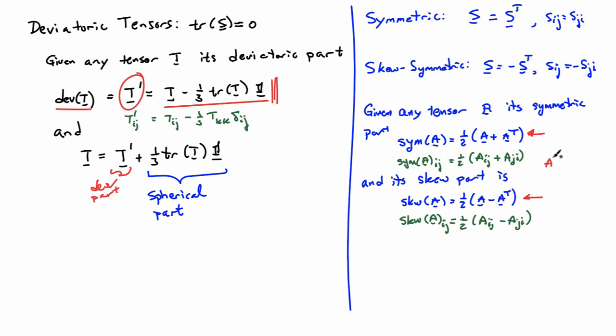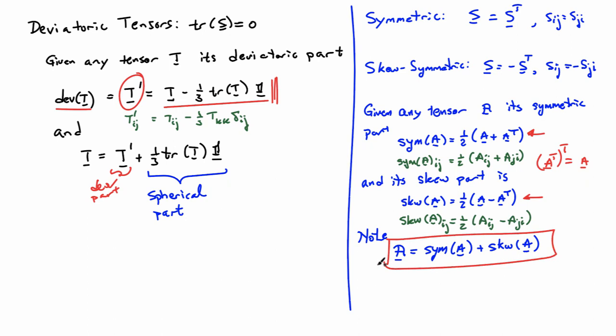Adding the skew part and symmetric part returns A, giving a general decomposition of any tensor into a symmetric part and a skew part. So there are two important decompositions: one that breaks a tensor into its symmetric and skew parts, and another that breaks it into its deviatoric and spherical parts. These are all special types of tensors with useful properties that arise frequently in continuum mechanics.